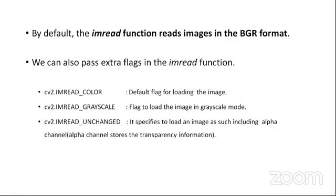The most important thing to note is that the imread function in OpenCV reads images in BGR format. Other libraries, such as matplotlib, use RGB format. That is the important thing to remember. We can also pass extra flags to the imread function if we want to read the image in a different format: CV2.IMREAD_COLOR, which is the default, and IMREAD_GRAYSCALE, if you want to read the image in grayscale format.